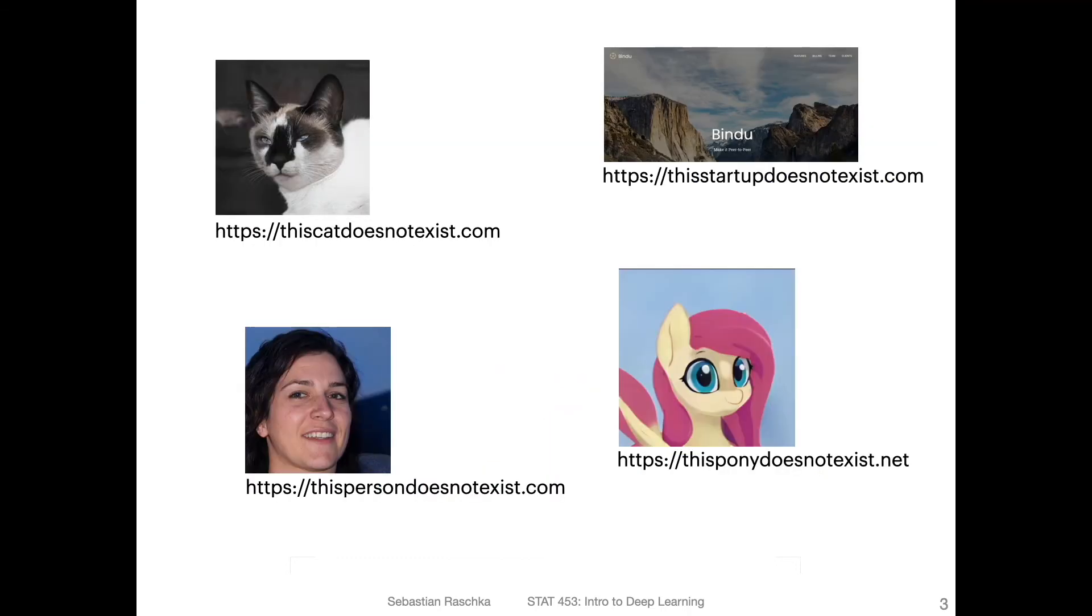Alright, so to give you some ideas of what we can do with GANs before I give you the lecture overview. Here's like a fun overview of different applications of GANs. Like these are more like joke or fun applications. There are these different websites, for example, this cat does not exist. And every time you refresh the website you will see a new cat, and this cat is generated by generative adversarial networks and they don't exist in real life. These are generated cats. Of course also one for face images, this person does not exist. There's also a fun one, this pony does not exist. And then there's also a recent one, this startup does not exist. So these are all fun applications of GANs. But of course there are many, many different things you can do with GANs. In this lecture we will focus on the fundamentals and we will see an example for handwritten digits and also face images.